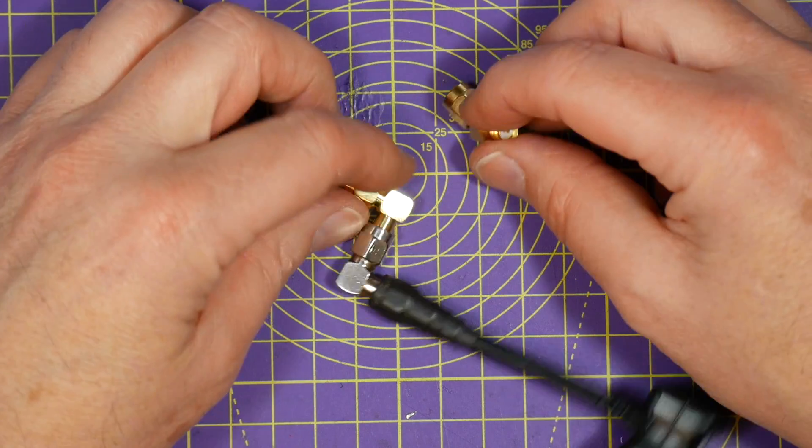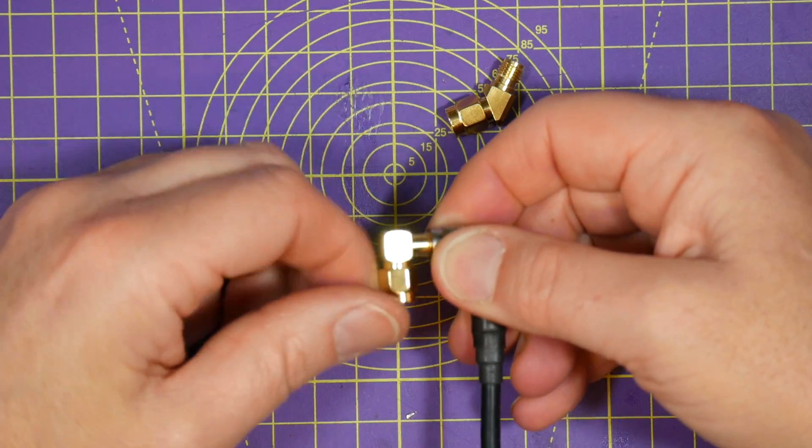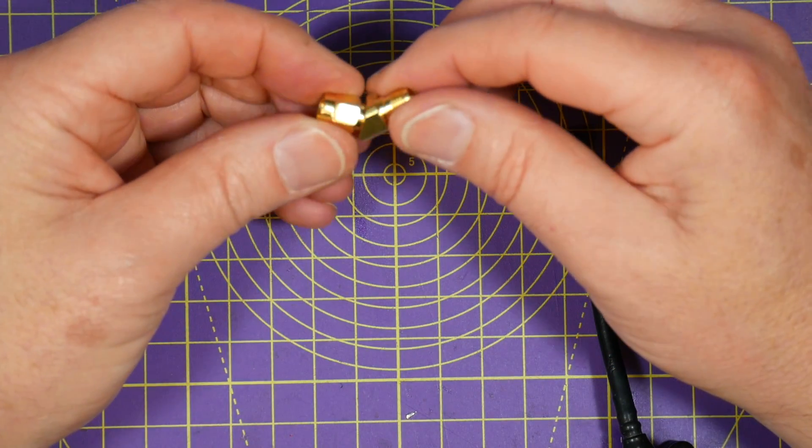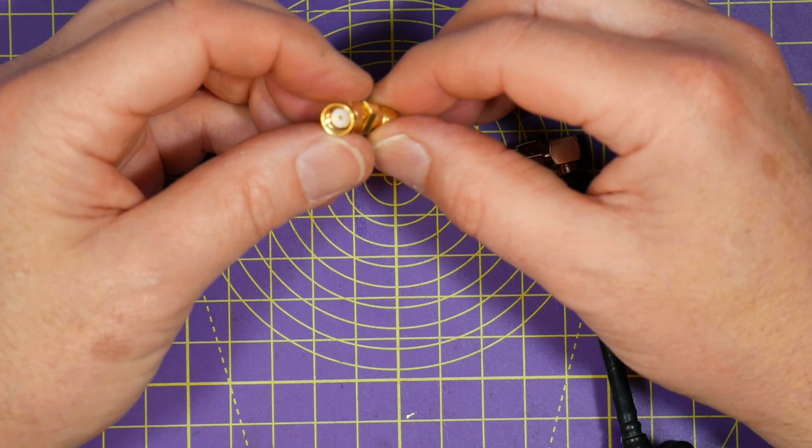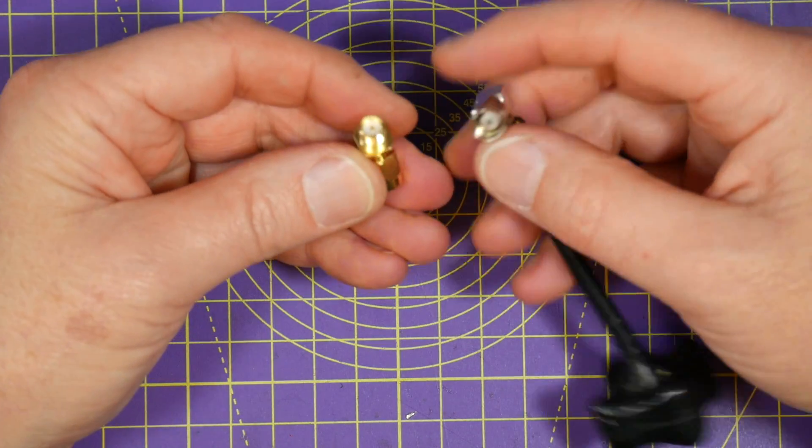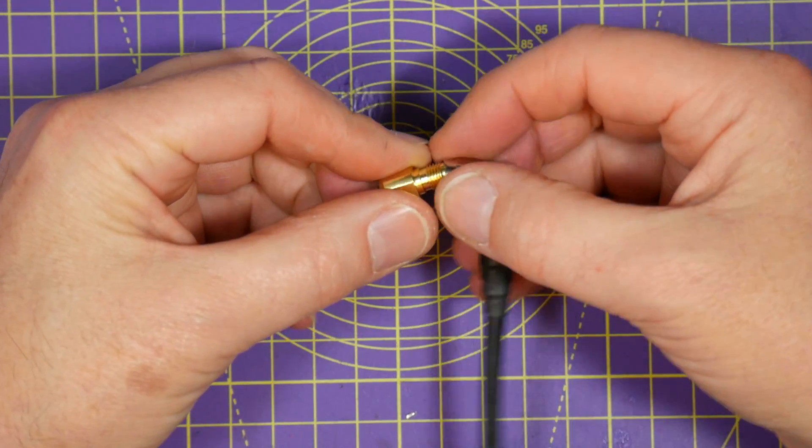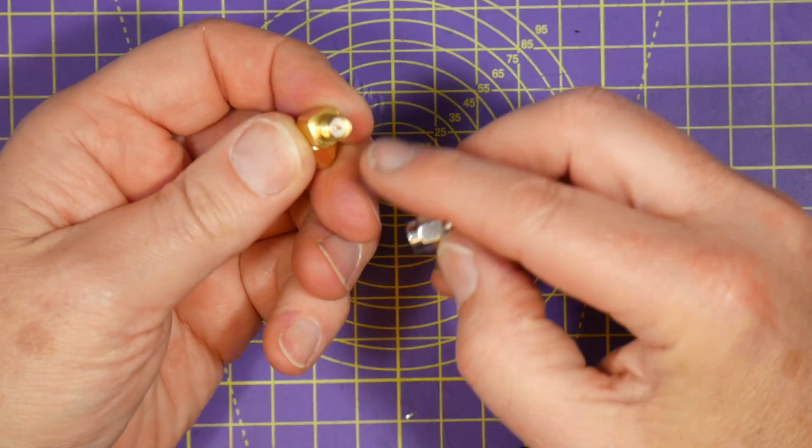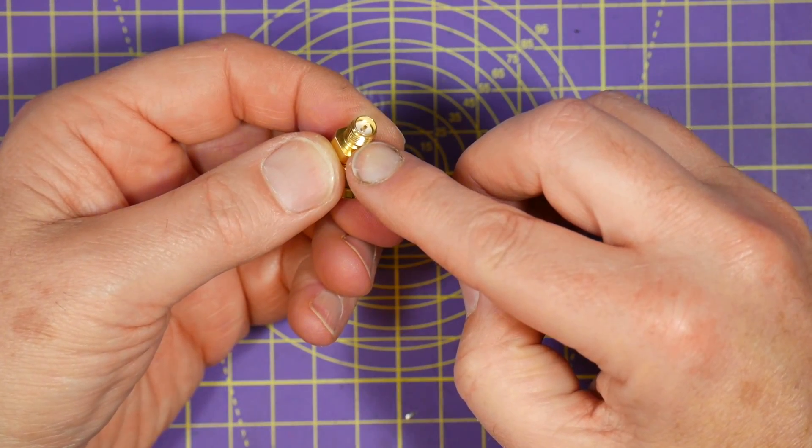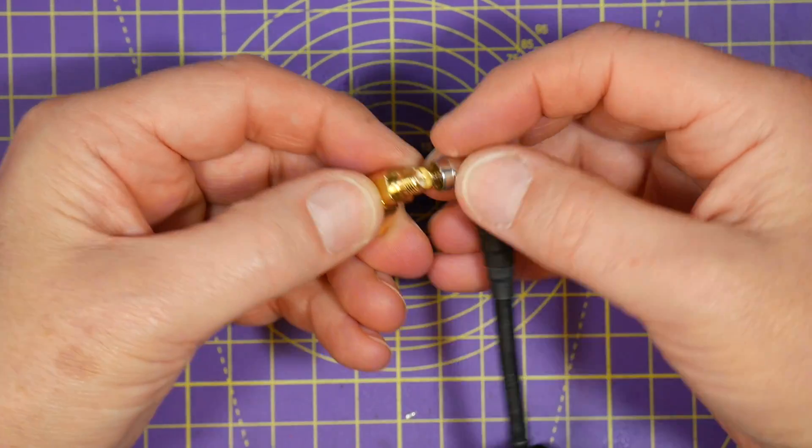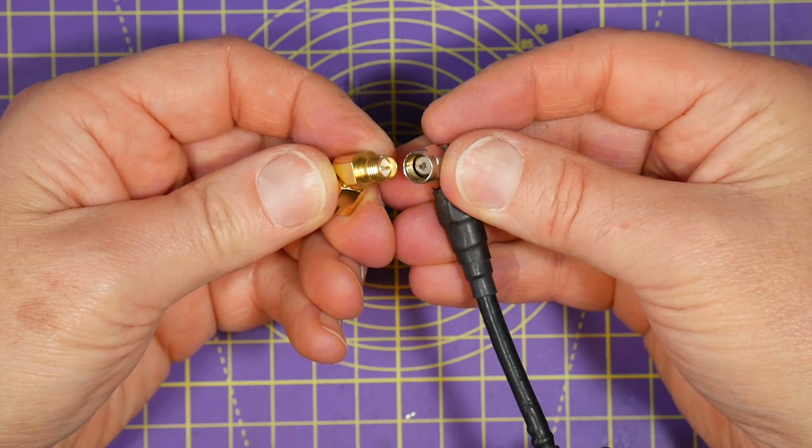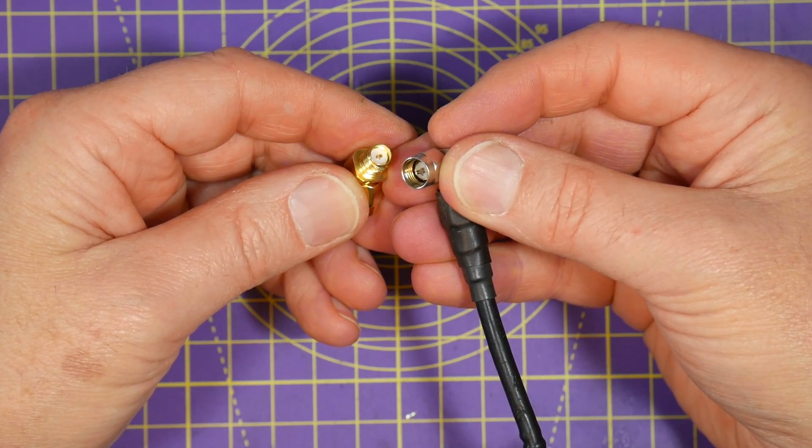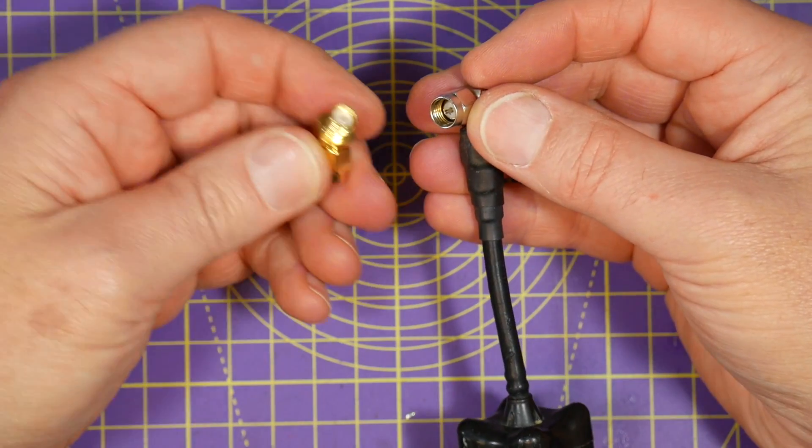And obviously you can get different angled ones to suit whatever you want to do. This is a right angle one here. Now, this is a 45 degree, but this is RPSMA. So look, if I try to screw that on there, that's got a pin and that's got a pin. So this is an SMA male and this is an RPSMA male. The outer will screw together, but because they've both got pins, they won't mate up. This is how the manufacturers have made them incompatible to stop high gain antennas being used on Wi-Fi equipment. It's bizarre, but that's the way it is.